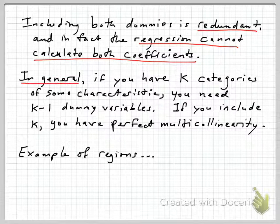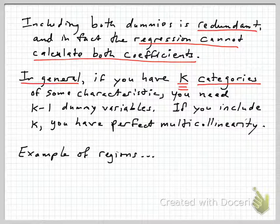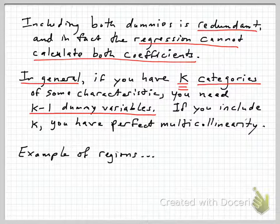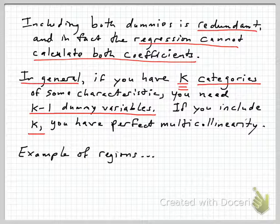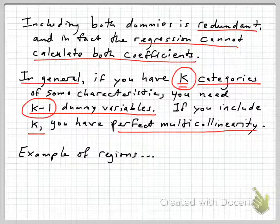In general, when we use dummy variables to capture categories — such as gender, racial categories, or locational categories — if you have k categories that you're trying to capture for some characteristic, say ethnicity, you need to include k minus 1 dummy variables. If you include all k dummy variables, you exhaust all possibilities and end up with perfect multicollinearity. In our gender case, k was 2, so we only need k minus 1, that is one dummy variable — either male or female will do.